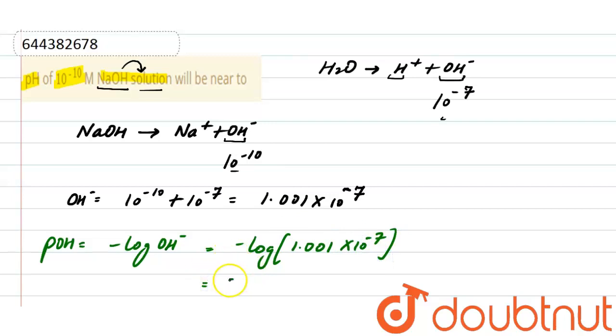This will be 7 minus log of 1.001, that means 7 minus 0.0043. And from here the value of pOH is approximately equals to 6.99.